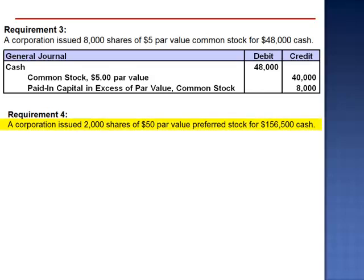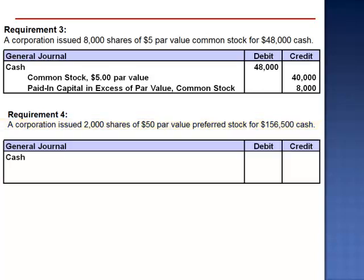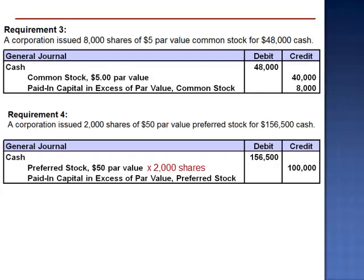Requirement 4. A corporation issued 2,000 shares of $50 par value preferred stock for $156,500 in cash. We debit cash for the amount received, $156,500. Credit the preferred stock $50 par value account for the par value of 2,000 preferred shares, $100,000. And credit paid-in capital in excess of par value on preferred stock, $56,500.